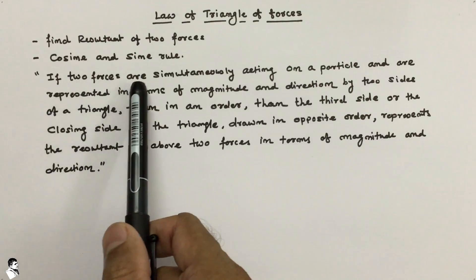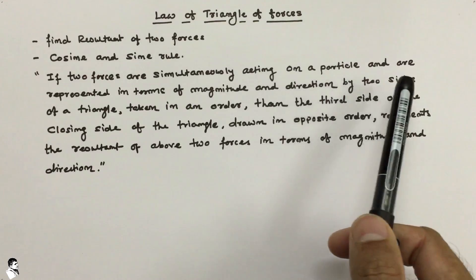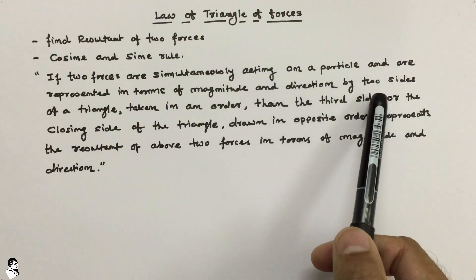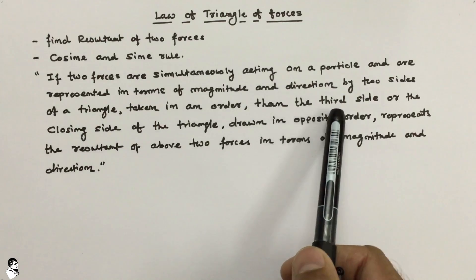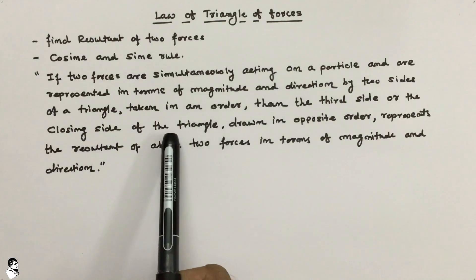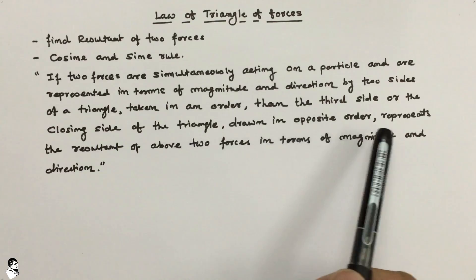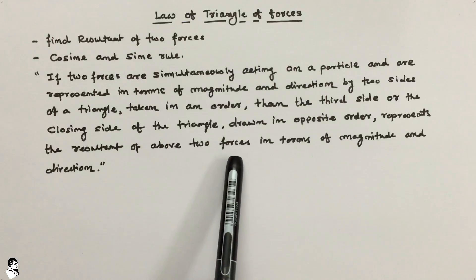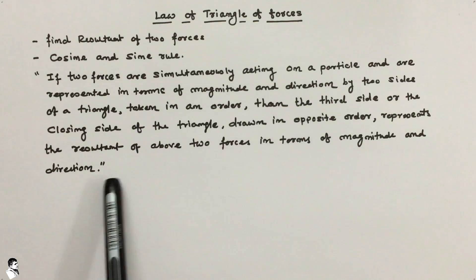Now if we look at the statement again: two forces simultaneously acting on a particle, if represented by two sides of a triangle, then the third side — the closing side of the triangle — represents the resultant of the given two forces, in terms of magnitude as well as direction.